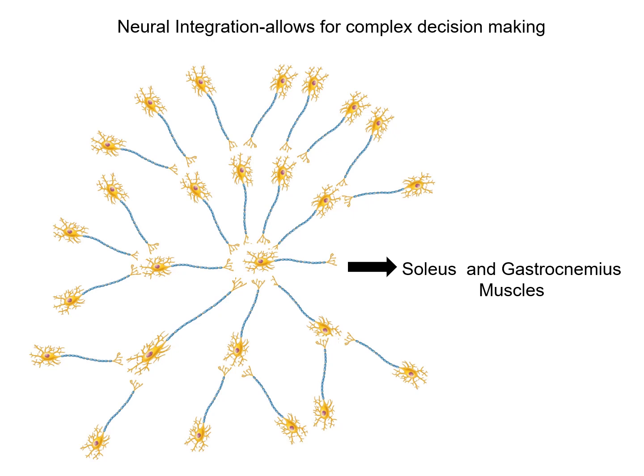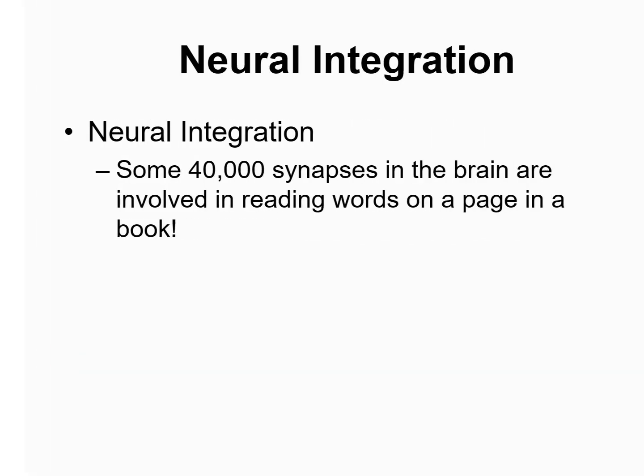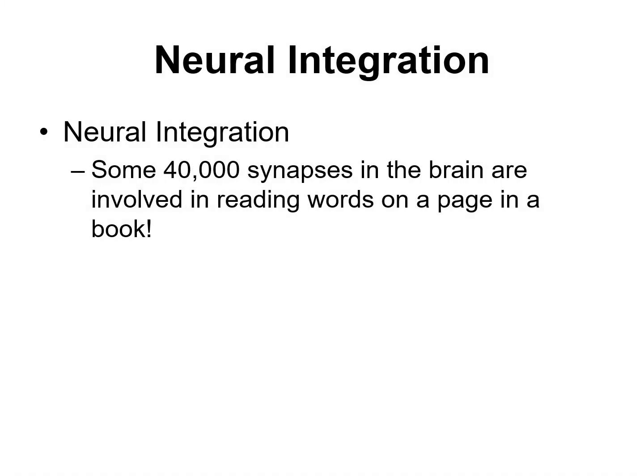Yes, synapses slow down transmission from point to point to the effectors, but they allow for the combining of inputs from different portions of the nervous system. Just to give you an idea of the magnitude of neural integration: there are some 40,000 synapses in your brain involved in this process.